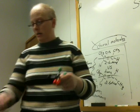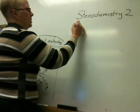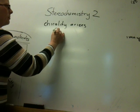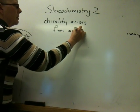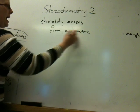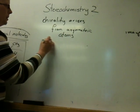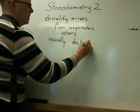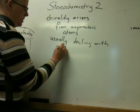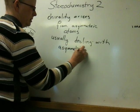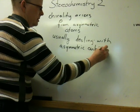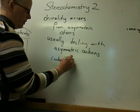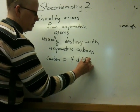Most asymmetric atoms are carbons. So we want to write this down. Chirality arises from asymmetric atoms. And there can be different asymmetric atoms, but usually you are dealing with asymmetric carbons. And this is a carbon with four different groups attached.